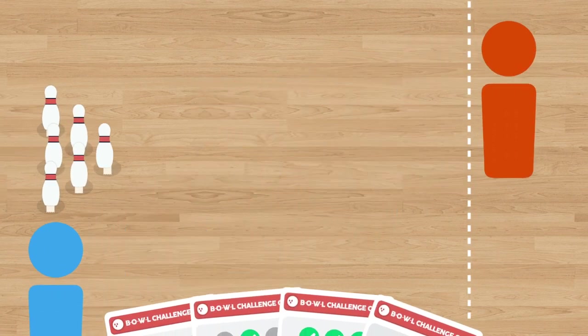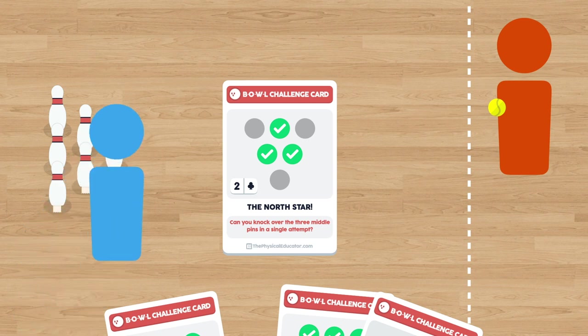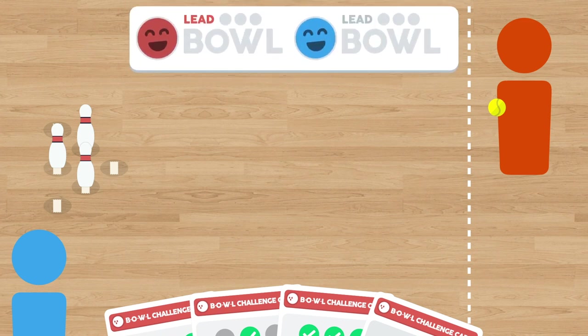The lead bowler starts the game by drawing a bowl challenge card. Their partner is responsible for setting up the pins into the formation that's displayed on that card. Once the pins are set up, the lead bowler shuffles their challenge card back into the deck.